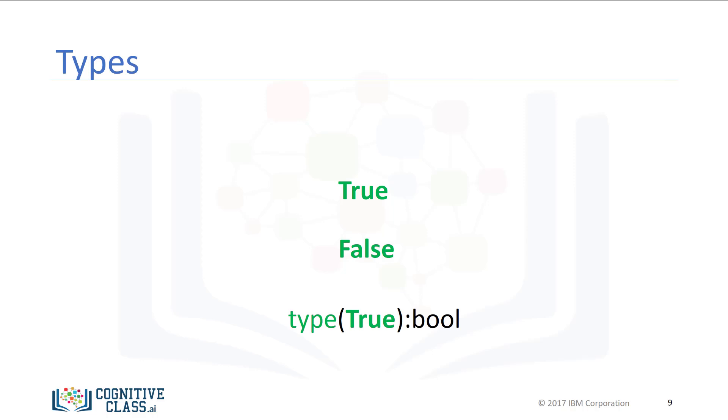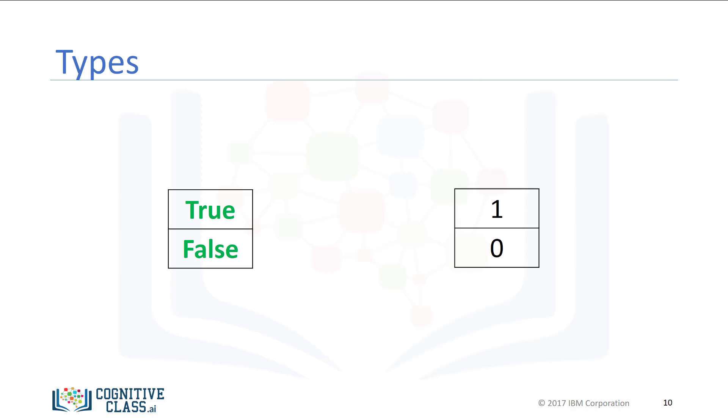If we cast a Boolean true to an integer or float, we will get a 1. If we cast a Boolean false to an integer or float, we get a 0. If you cast a 1 to a Boolean, you get a true. Similarly, if you cast a 0 to a Boolean, you get a false.